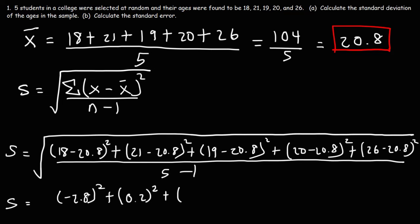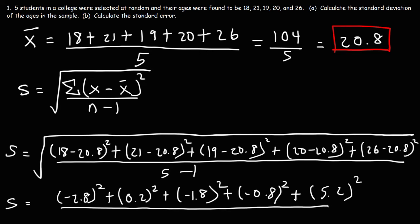19 minus 20.8. That's negative 1.8. 20 minus 20.8 is negative 0.8. And 26 minus 20.8, that's going to be 5.2. Now 5 minus 1 is 4.